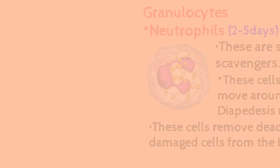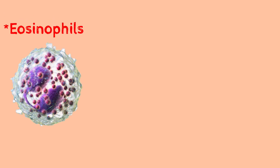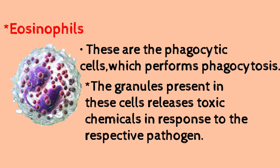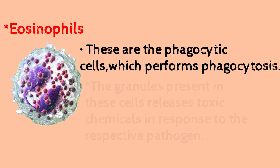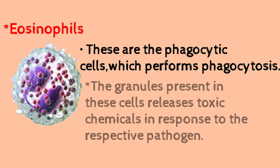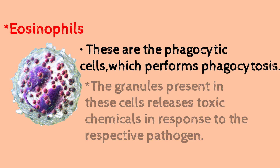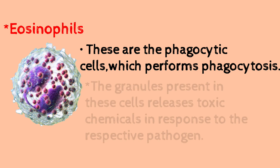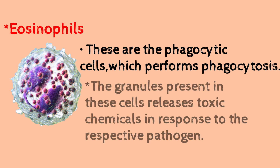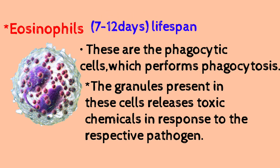The second type of granulocyte is eosinophils. Eosinophils perform phagocytosis — if bacteria, virus, or any pathogen enters, eosinophils respond. They produce or emit toxic chemicals from their granules to destroy pathogens. The normal lifespan of eosinophils is 7 to 12 days.